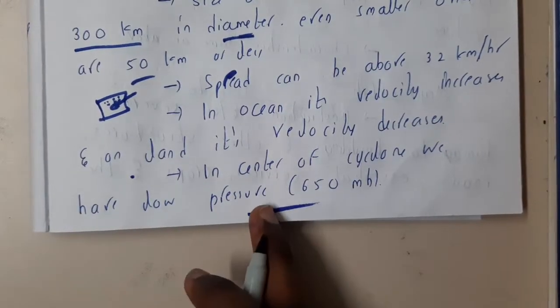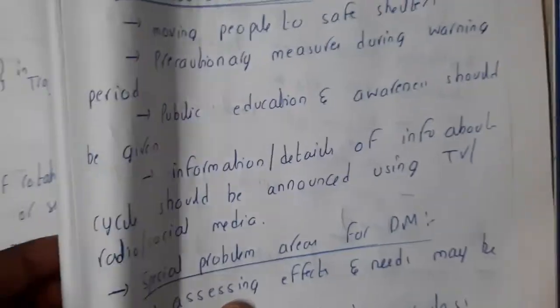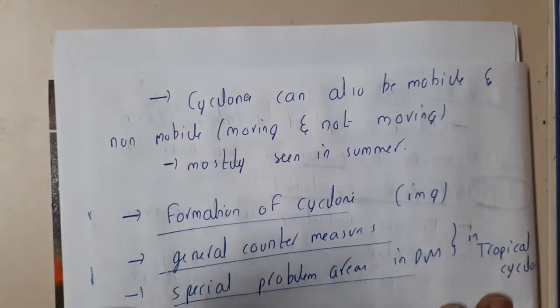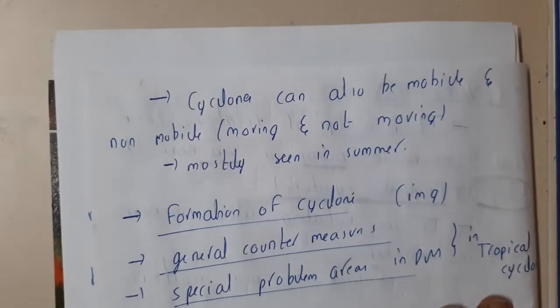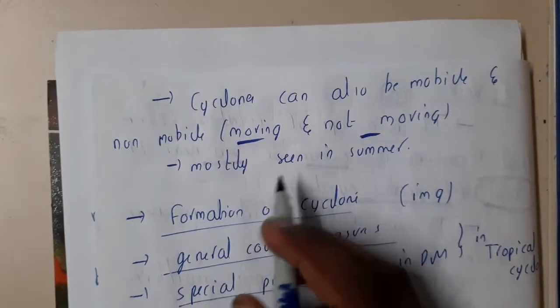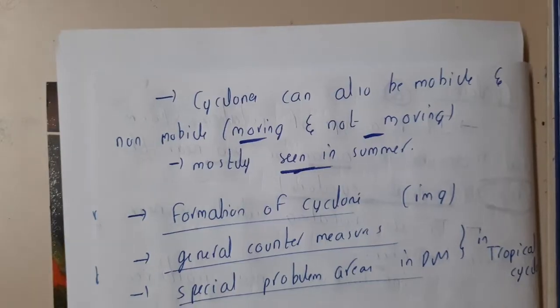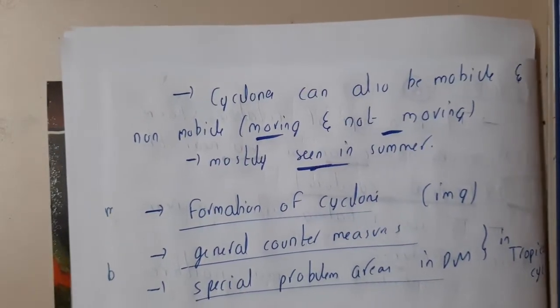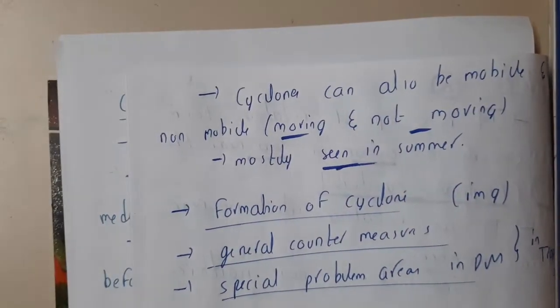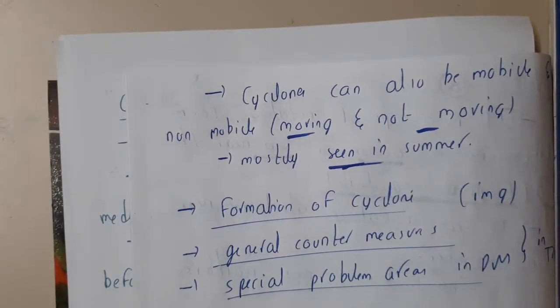At the center of the cyclone there is a low pressure area of 650. Cyclones can be both mobile and non-mobile — they can move or stay stationary. Both types are available and cyclones are commonly seen in summer.